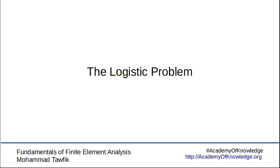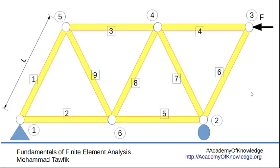In earlier programs using finite element modeling of bars, we didn't have a problem assembling the global stiffness matrix, because each element is connected to the following element at a node that's well defined by number and location. However, in a truss, this is not the case at all.